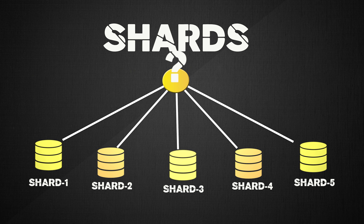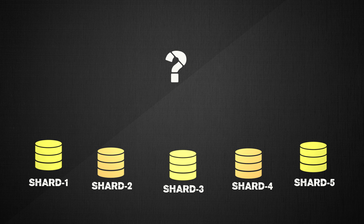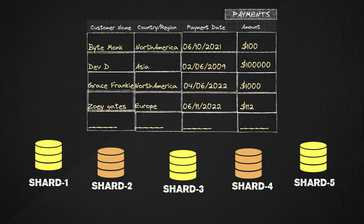But how do we know how to split up the data and where to put certain chunks of data in what shard or partition? When it comes to relational databases, we can split up the tables — store certain rows in some shards and other rows in other shards. Here we have a payments table where we are storing customer name, demographics, and payment details.